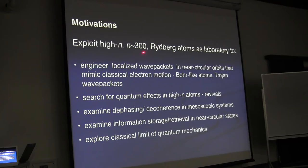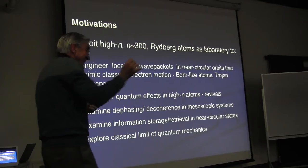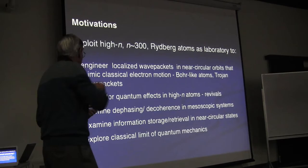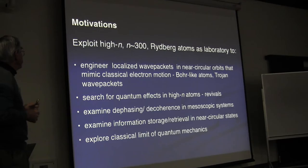So why are we doing this? We're starting out with n about 300 Rydberg, and we're using these atoms as a way of investigating protocols to engineer localized wave packets that move in near-circular orbits — an electron wave packet that mimics classical electron motion, as in the Bohr model of the atom, or as in the motion of the Trojan asteroids that are associated with Jupiter.